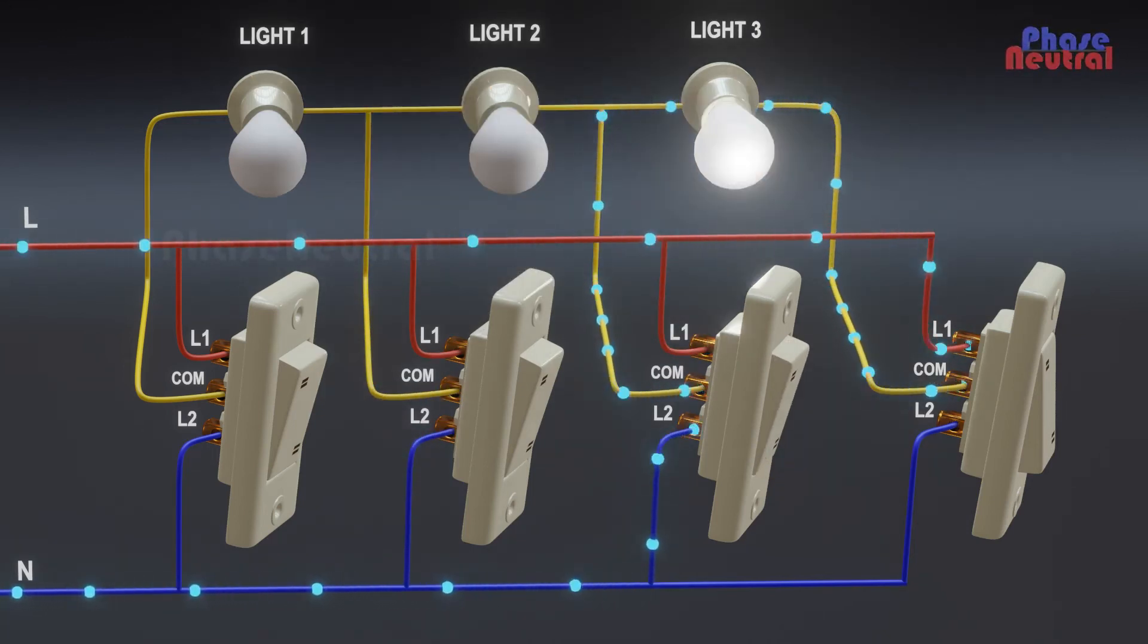When third switch is in on position, the current flows through the fourth switch common terminal to third bulb.